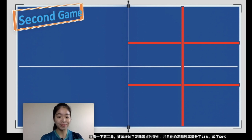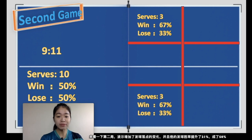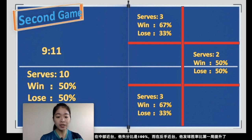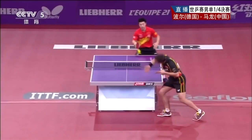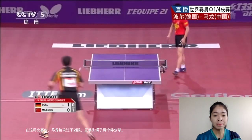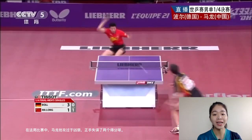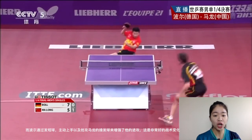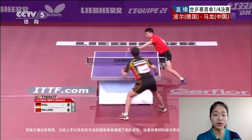In the second game, Timo changed his serve to more varied placements and his winning percentage on serve increased 21 points to 50%. Three balls went to Ma Long's forehand shot area and he scored two out of three. At the middle shot area he lost 100% on his serve, but at the backhand shot area he got a higher winning percentage. In this game Ma Long tried to attack too hard and missed two points on his forehand, while Timo increased his attacking, trying to initiate attack by serving short and then attacking Ma Long's return — a really good strategy change.